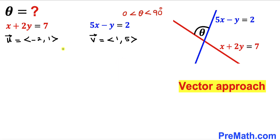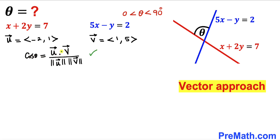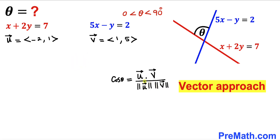Now we are going to find the angle between these two vectors. Let's recall this well-known formula: cosine of theta is going to be equal to the dot product of vectors u and v, divided by the magnitude of vector u times the magnitude of vector v. Now we are going to find the values of these magnitudes.